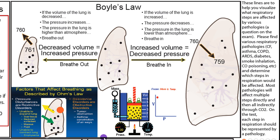So if I can go up to the top right of this figure, one other way to really make sure that you understand this material is to think of pathologies that affect the individual steps in respiration. So find some respiratory pathologies like CF, asthma, COPD, ARDS, diabetes, smoke inhalation, CO poisoning, any of these things, and determine which steps in respiration would be affected. Most pathologies are going to affect multiple steps directly, and then it will affect all steps indirectly through CO2.